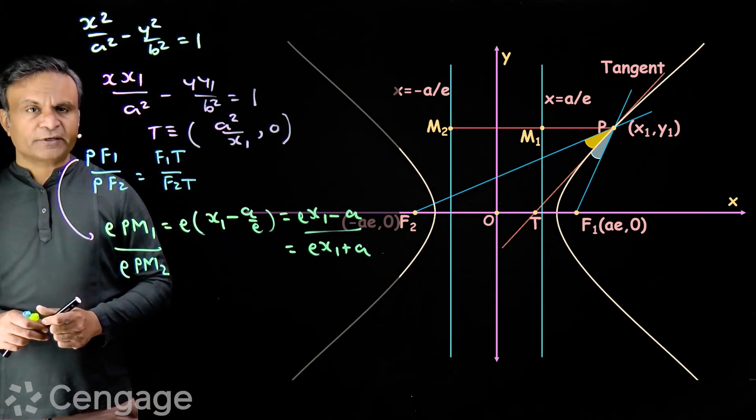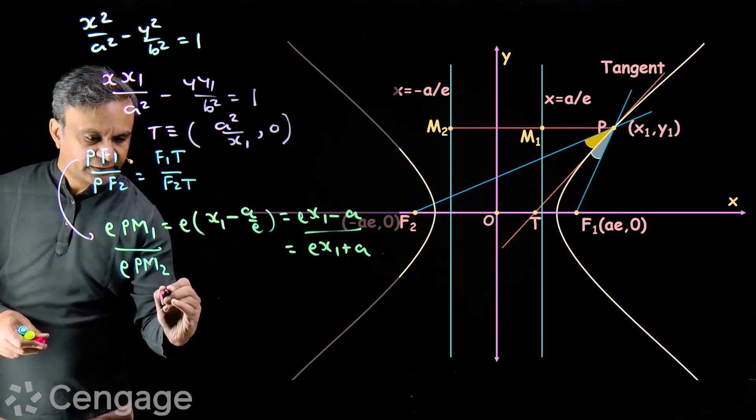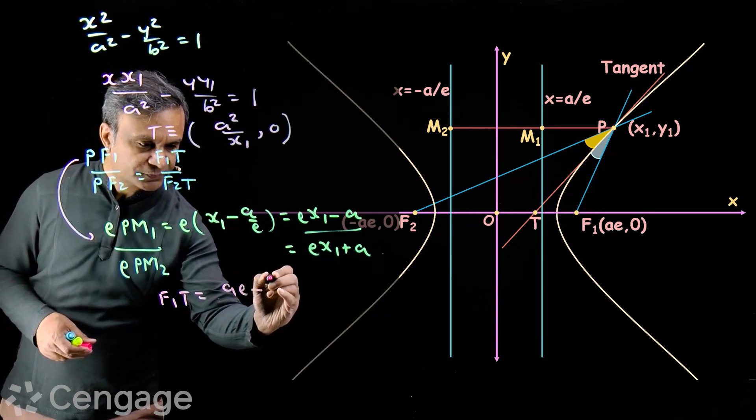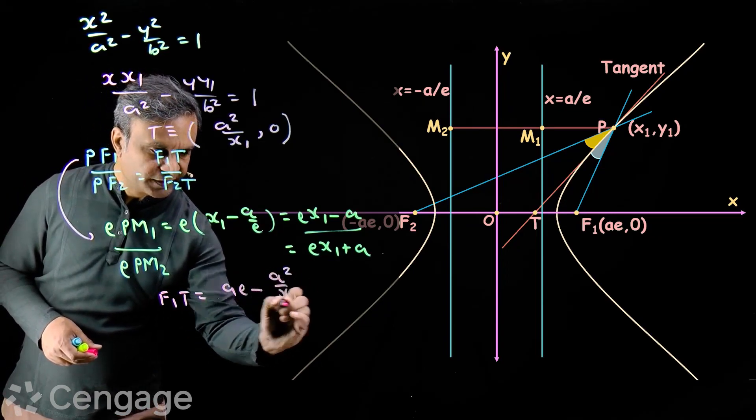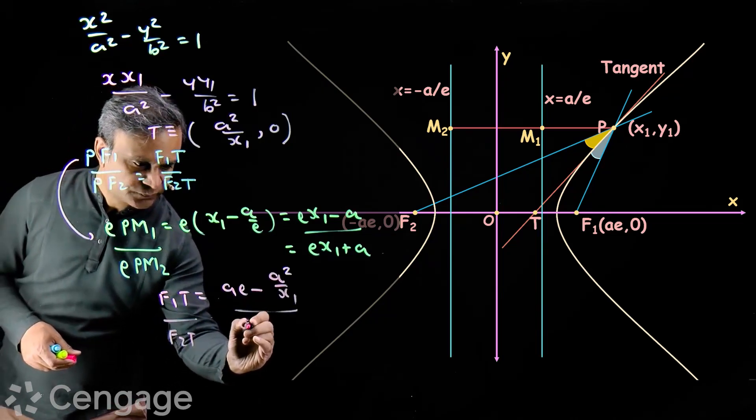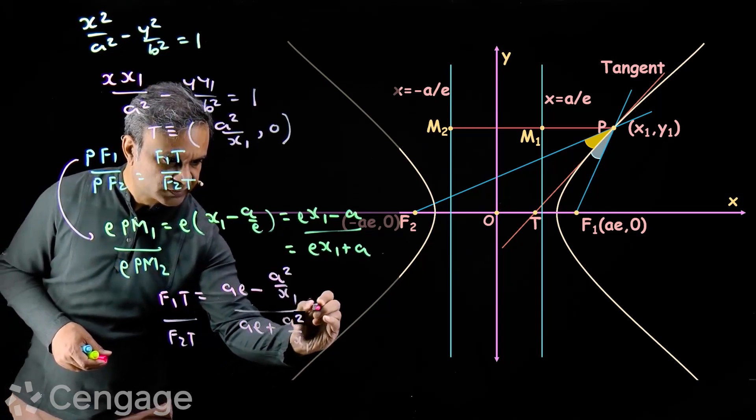What is F1T? Simple. What is F1T? F1T is ae minus a square over x1. And F2T is ae plus a square over x1.